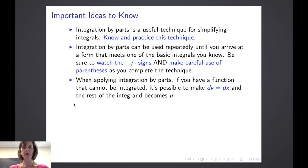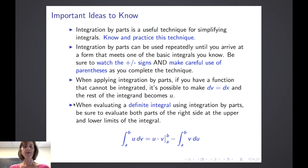When you apply integration by parts, if you have a function that cannot be integrated, such as we did in this case with the inverse sine of x, it's possible to let dv be dx and the rest of the integrand becomes u. And finally, when evaluating a definite integral using integration by parts, make sure you evaluate both parts of the right side of the equation at the upper and lower limits of the integral.